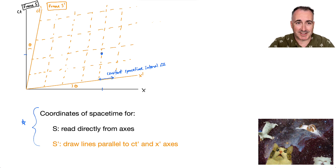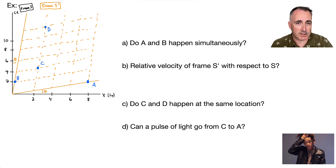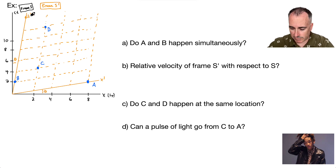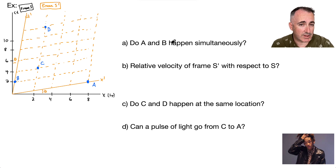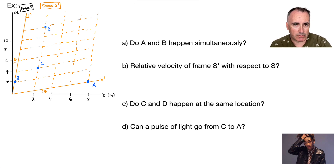Let's now do an example so we can see what we really mean by all this. Don't get too tripped up when you see these weird grids. Here's a question — although it looks crazy, it's just what we've been doing before. We've got our axes: X primed and CT primed in orange for frame S primed, and CT and X in black for frame S. The diagram has events A, B, C, and D, and we ask: do A and B happen simultaneously, and do C and D happen in the same location — in frame S and in frame S primed?